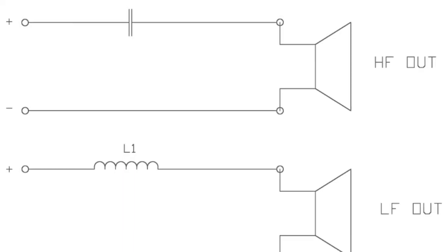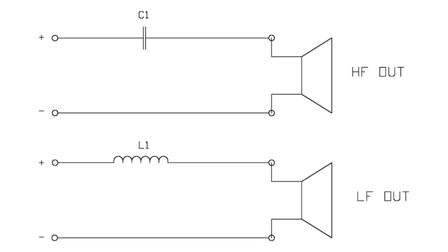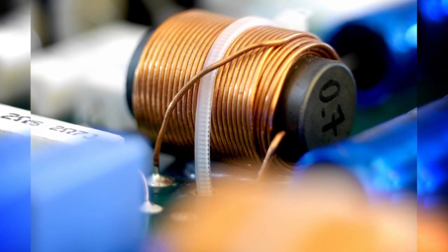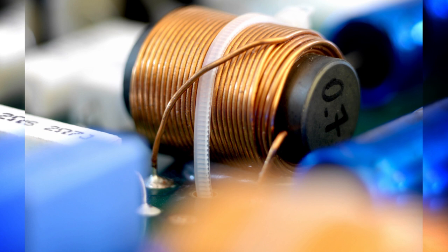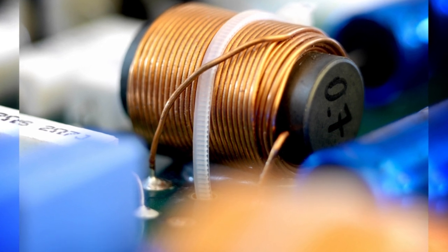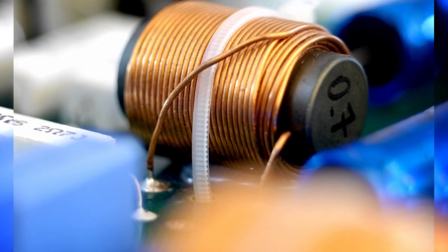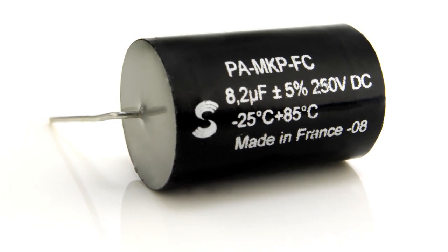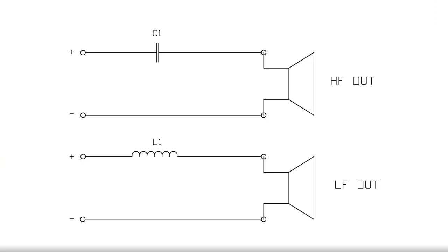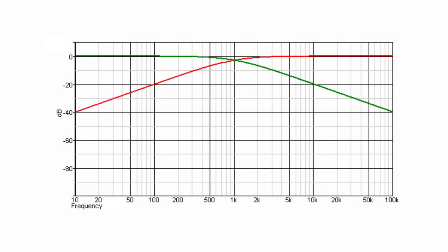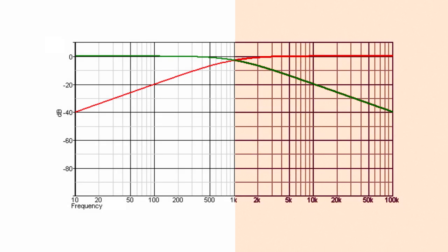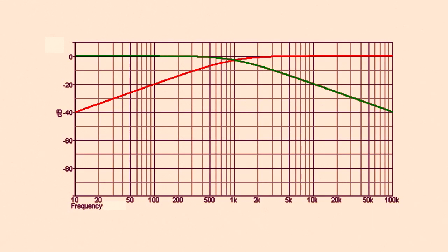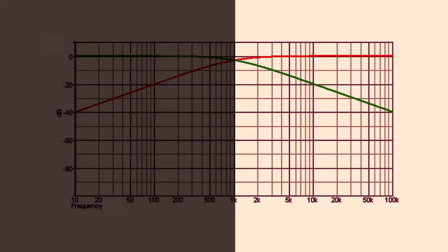The simplest form of crossover is called first order. In a two-way design, it uses an inductor or a coil of wire attached to the bass driver, which allows only low frequencies to reach this driver. Another component, a capacitor, is attached to the tweeter and enables only the high frequencies to pass through to this unit. A first-order crossover has a shallow roll-off of 6dB per octave. Where the roll-off of the two drive units meet, the frequencies sum and produce an overall flat response, which is what the speaker designer is looking for.